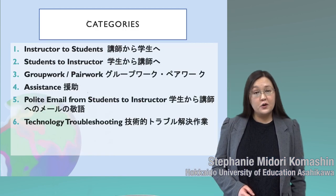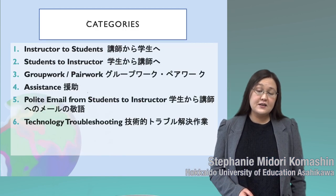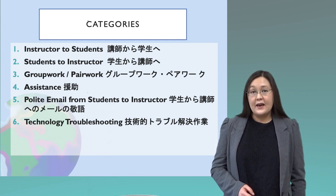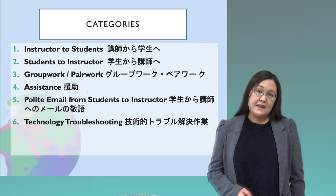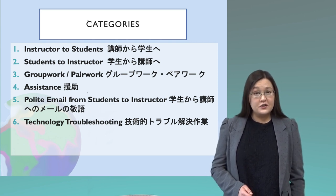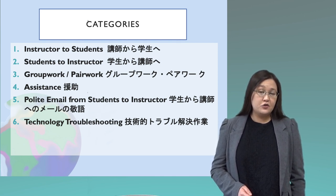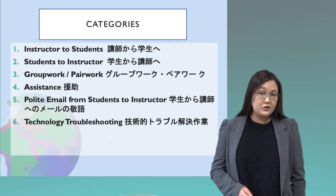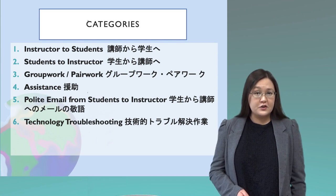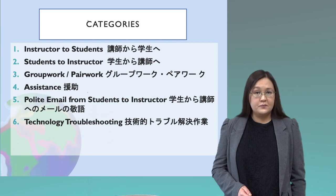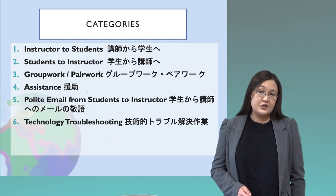In this lecture, we will go through different categories of the kind of English that you need to know, listen, speak, and write in the university setting. Starting from instructor to student, next student to instructor, and students to students in group work and pair work. Next, assistance when you need to ask for help from your instructor, how to write a polite email to your instructor, and finally, technology troubleshooting.